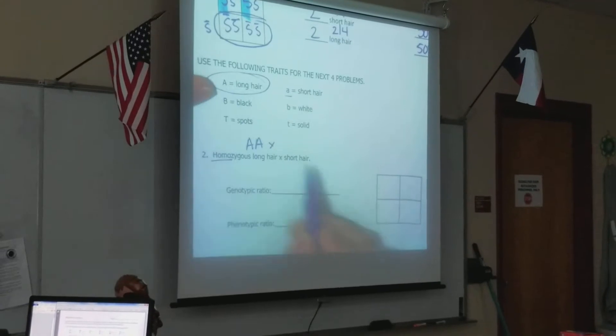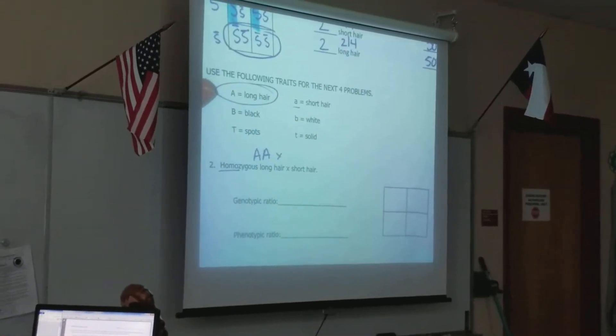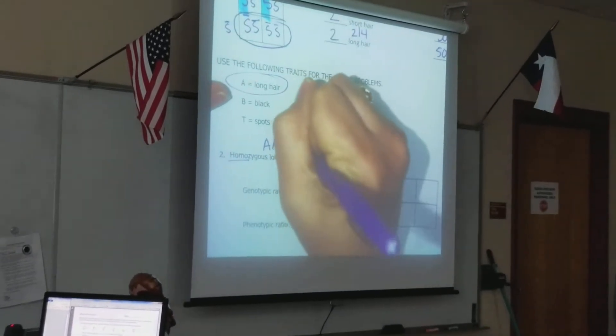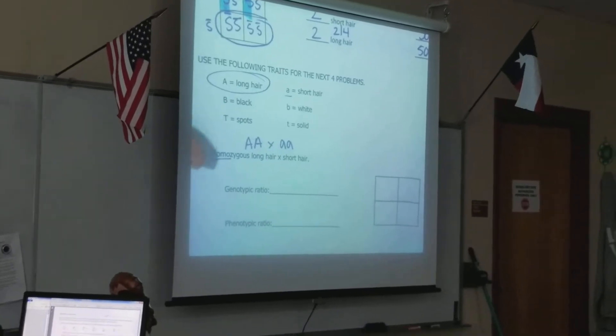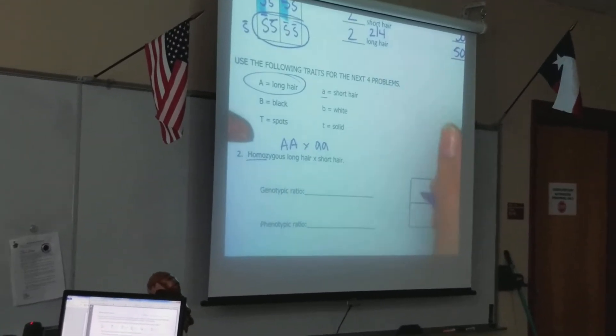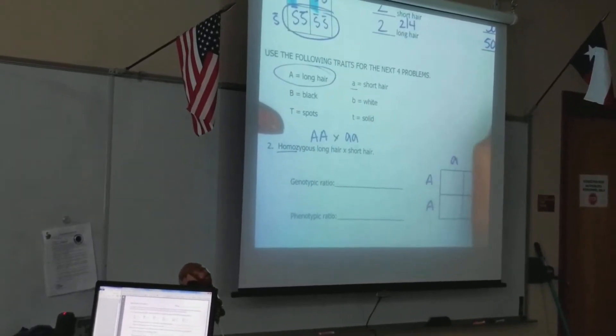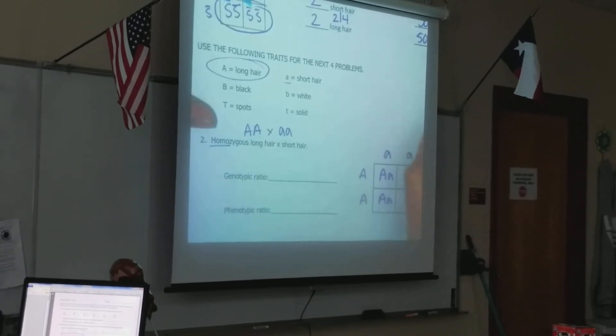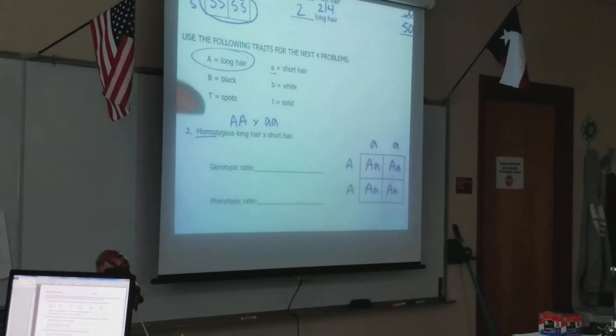I can't put a capital letter because if I did, then that would now be expressed due to the law of dominance. Does that make sense? So in order for a recessive trait to show up, they both must be recessive. So now that you know your two genotypes that you're crossing for the parents, you use your law of segregation. One parent goes on the left, the other parent goes across the top.